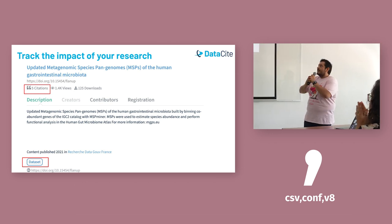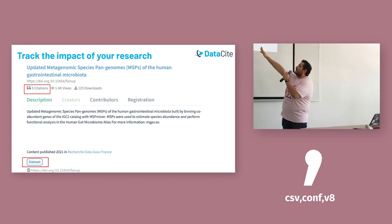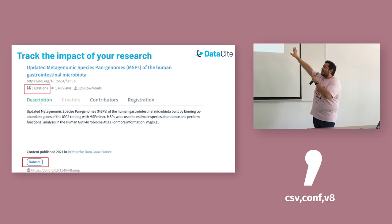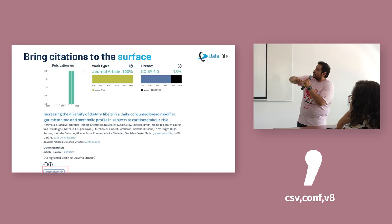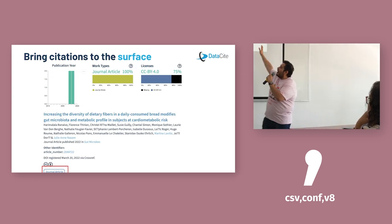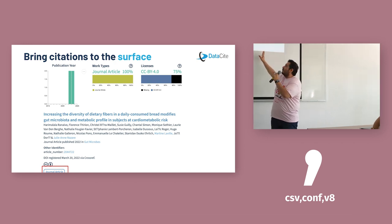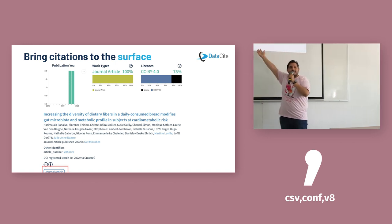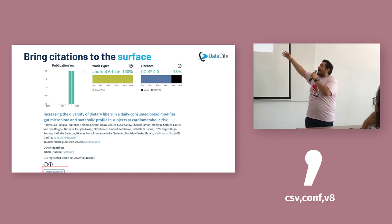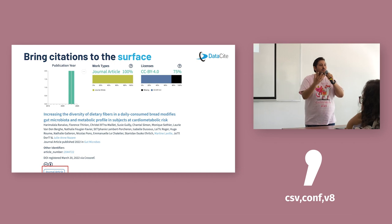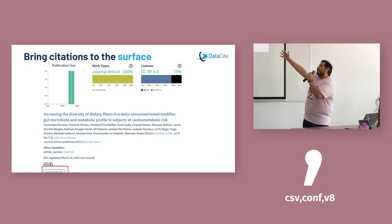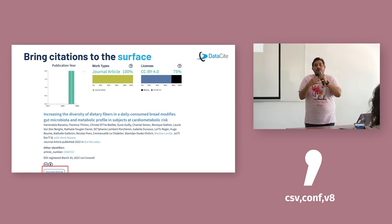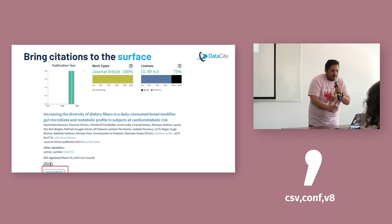We can track the impact of our research. Here is an example of a data set that has at least five citations — you can see the description, the citations, and we can track which other research outputs are citing our original output. Here is a journal article citing the previously shared data set. This is crucial for creators to have visible recognition and acknowledgement of what they are doing.